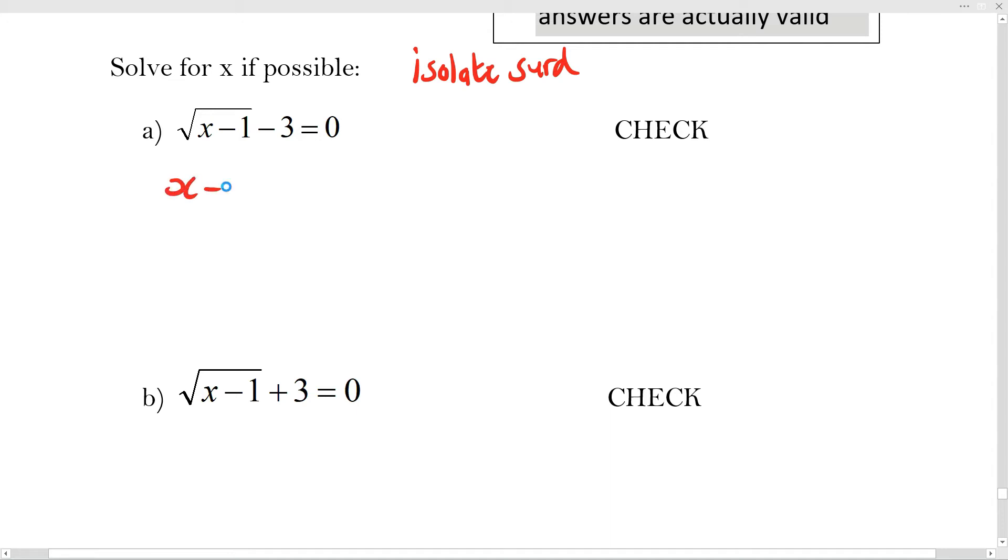So I'm going to get this root of x minus 1 and I'm going to get it by itself. And now I can square both sides. That's really quite straightforward. I'm going to end up with just x minus 1 equals 9. So x will equal 10.